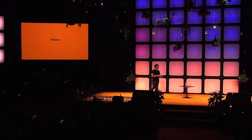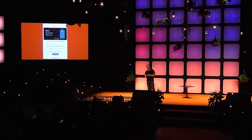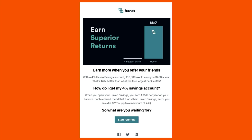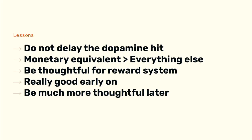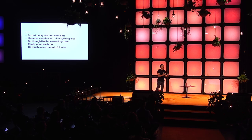I ran one referral strategy at Haven, a fintech company where you can store money in the bank. Every time you referred a friend, you'd get an extra 0.25% APY, up to 4%. If you don't work in fintech, a 4% APY is ridiculous — that's a lot of money. But it didn't work, because there was absolutely zero dopamine hit for getting 0.25%. What really works is: do not delay the dopamine hit. People want money or a monetary equivalent. If you can give them $10 for signing up, give them $10. The monetary reward is what drives referrals.